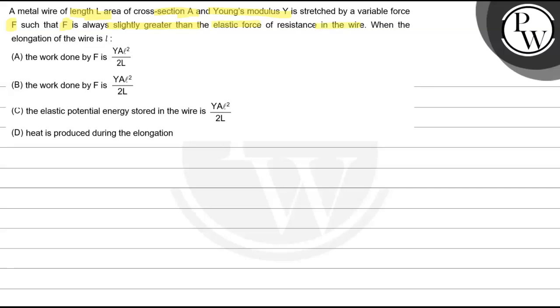When the elongation of the wire is L, first option: work done by F is YAL² by 2L. Second option: work done by F is YAL² by 2L. Third option: the elastic potential energy stored in the wire is YAL² by 2L. Fourth option: heat is produced during the elongation.